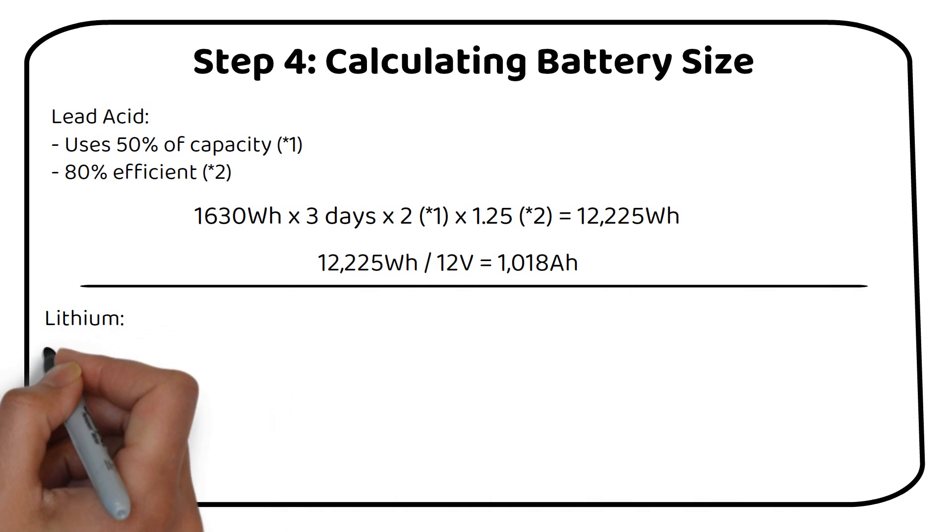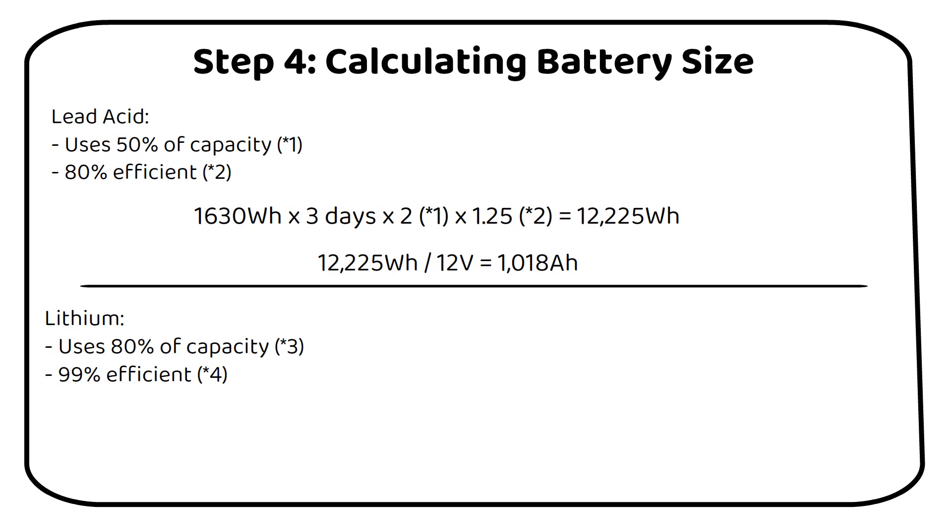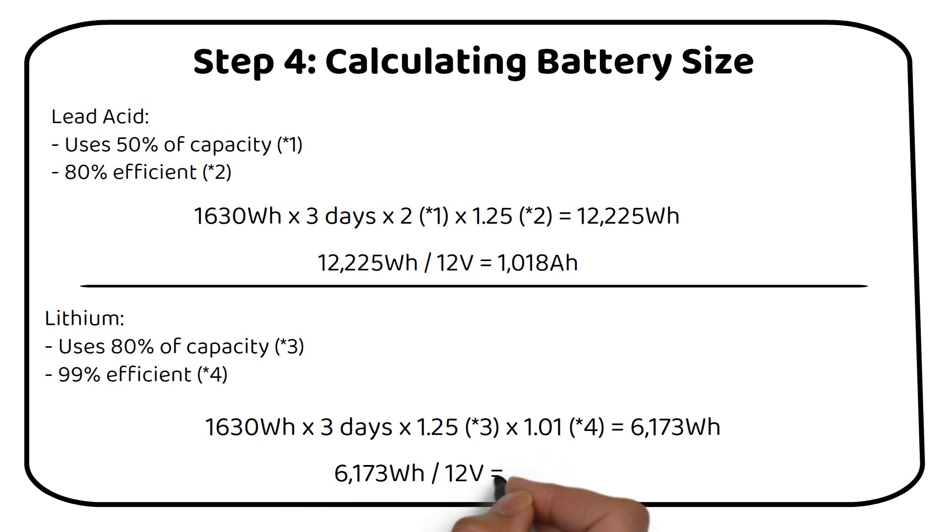For lithium batteries, the scenario is more favorable. You can use up to 80% of a lithium battery's capacity. And they boast a higher energy conversion efficiency of 99%. Applying the same load analysis, we get 1630Wh, which is the daily usage, times 3, equals the days of autonomy, times 1.25 equals 80% usage, times 1.01 equals 99% efficiency, and we become 6173Wh. Dividing this by the battery voltage gives us 6173Wh divided by 12V equals 514Ah. This comparison clearly shows that lithium batteries require a much smaller capacity than lead-acid batteries for the same energy needs, thanks to their higher efficiency and greater usable capacity.